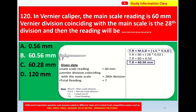Given: main scale reading = 60 mm, vernier division coinciding = 28th division. Total reading = main scale reading + (least count × vernier scale division) = 60 mm + (0.02 × 28).